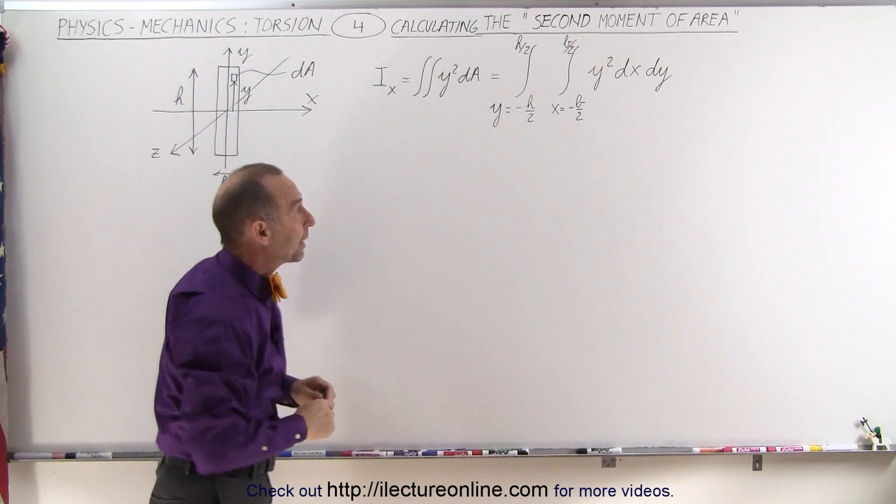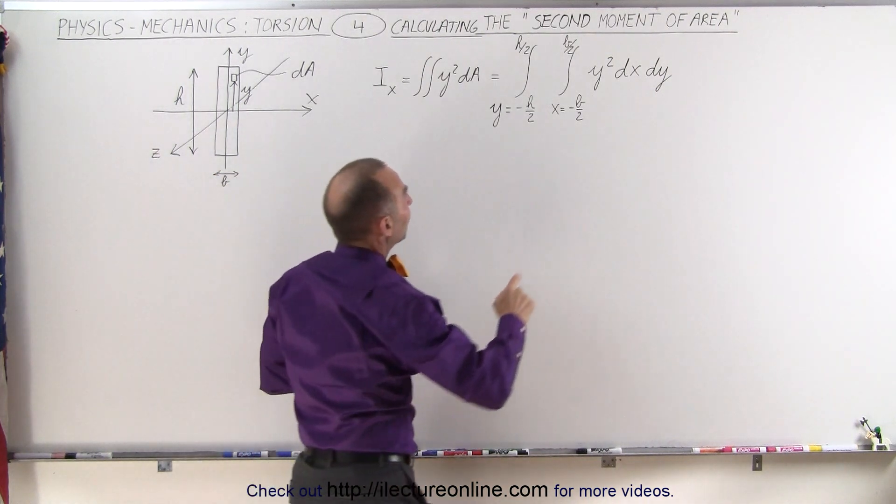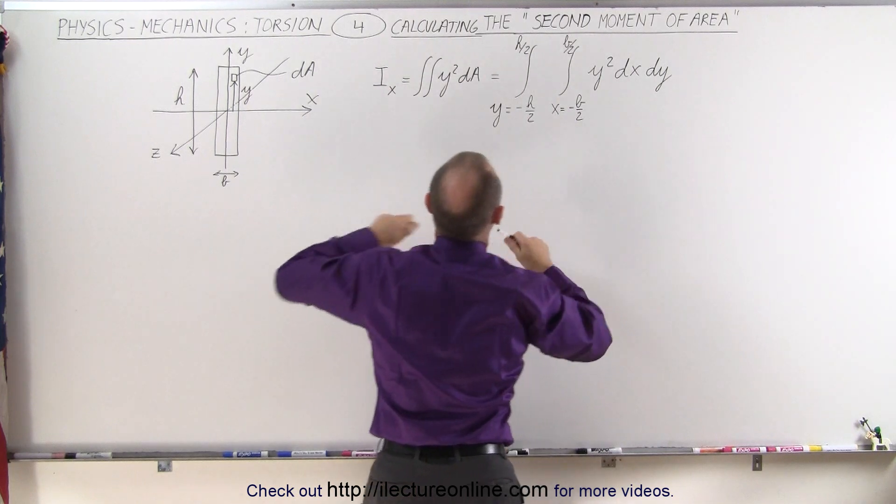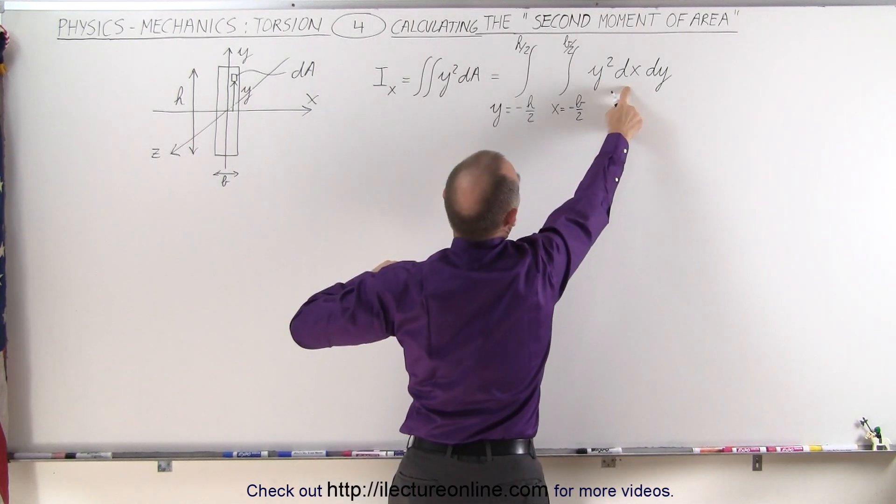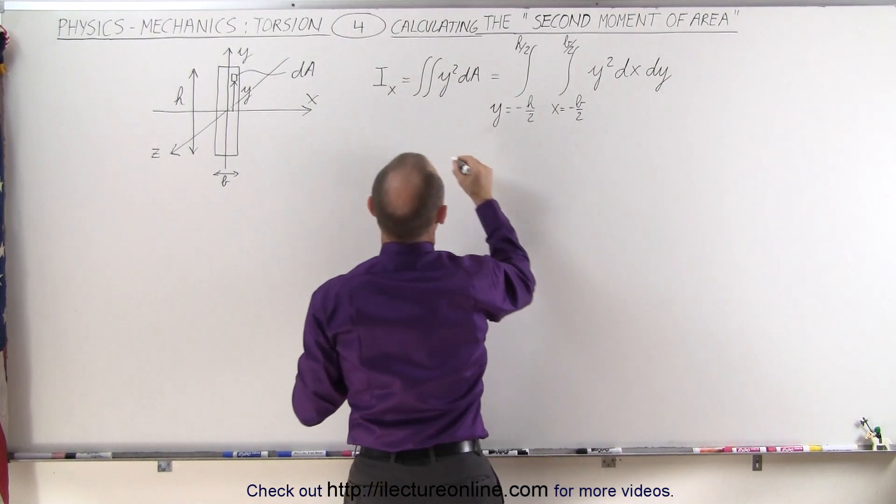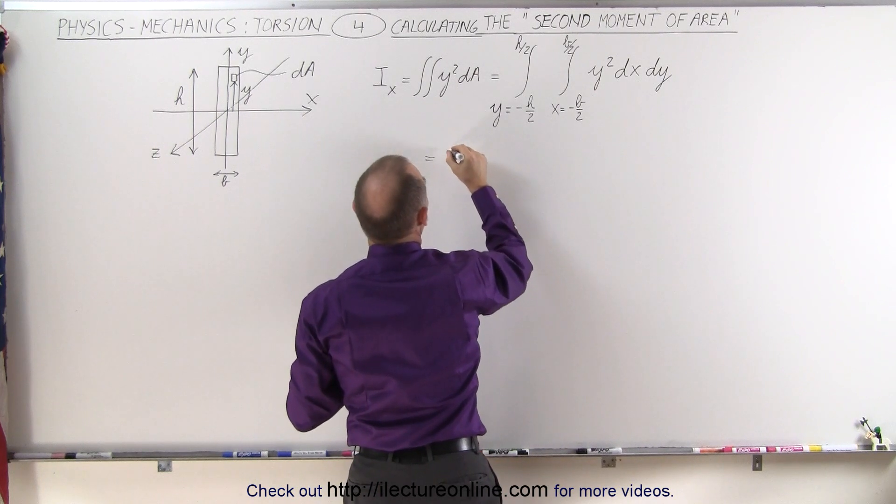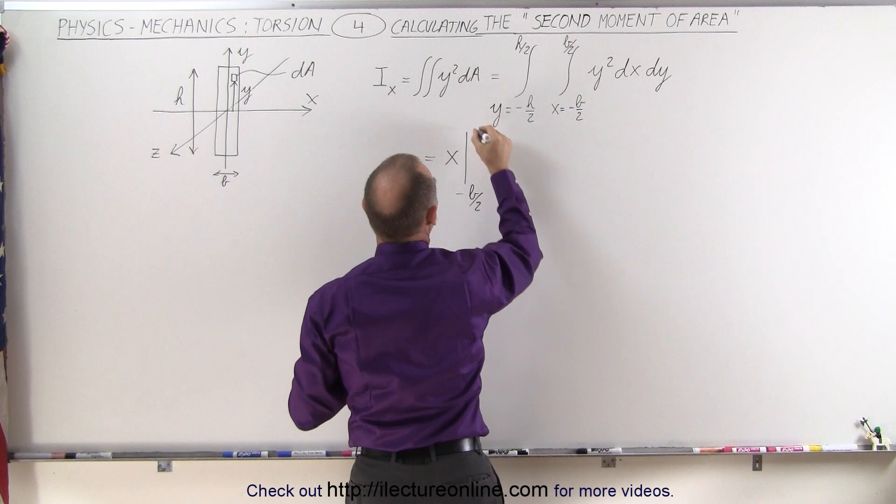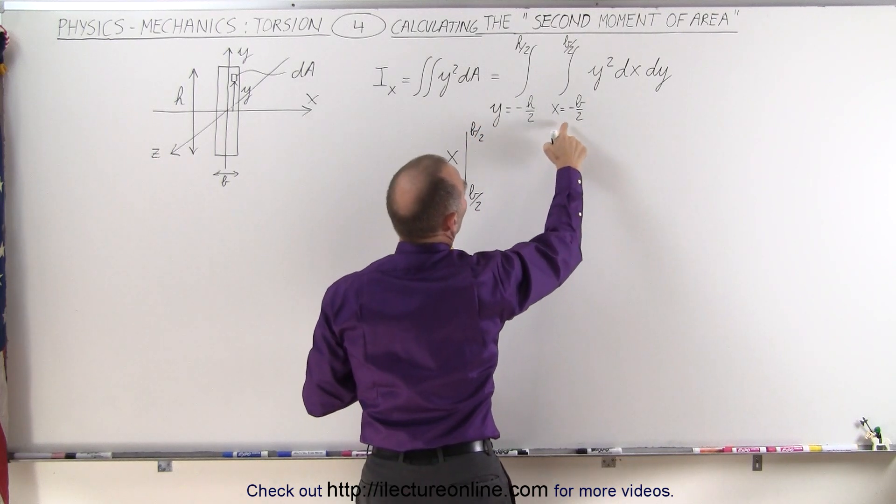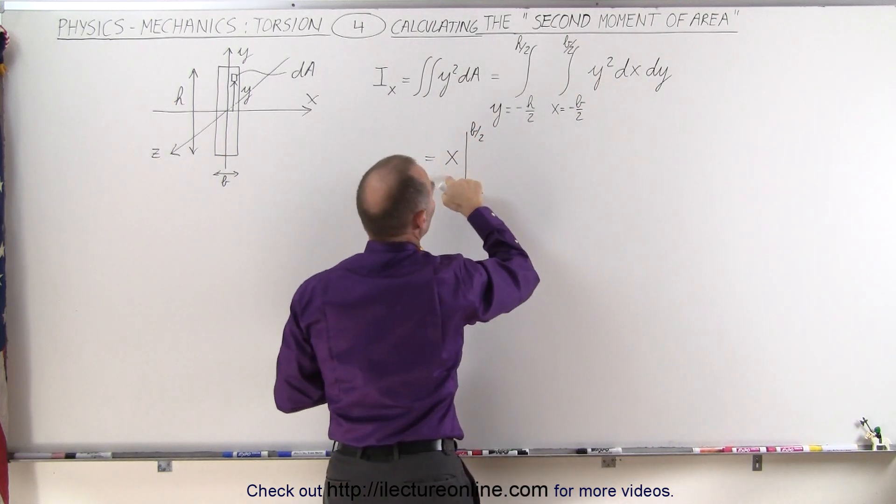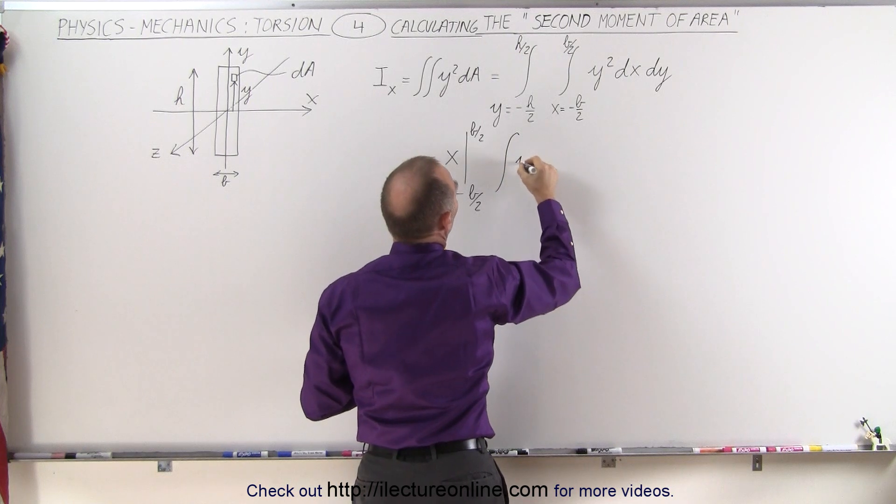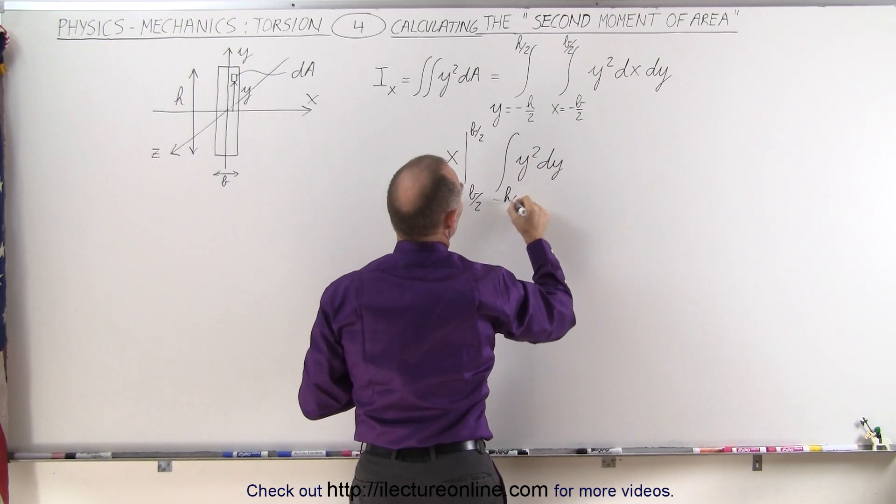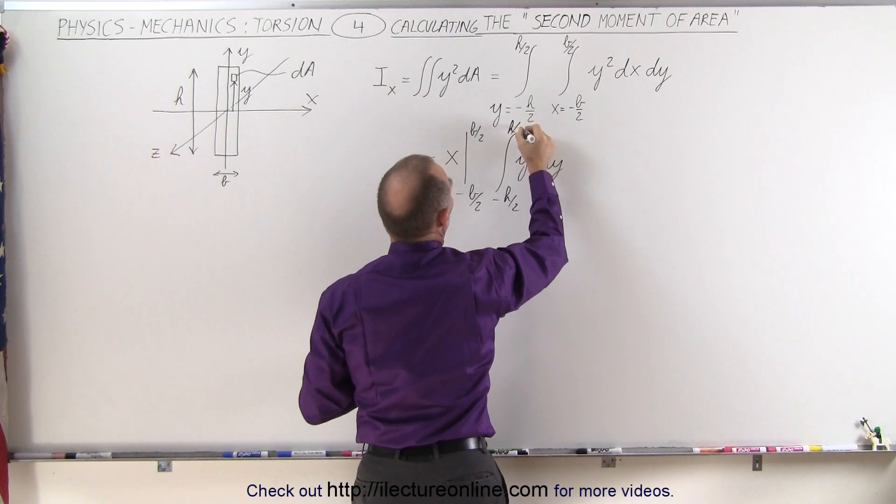Let's go ahead and integrate and see what we get. Okay, so we have to integrate across dy, so we'll do this integral first, oh no, let's do dx first. So we'll integrate over dx, so this is equal to x evaluated from minus b over 2 to b over 2, because when we integrate dx, we simply get x, times the integral of y-squared dy, going from minus h over 2 to h over 2.